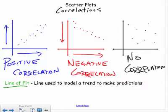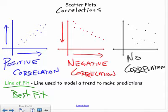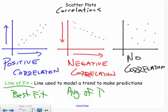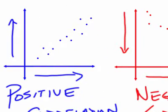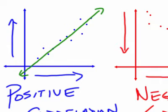We use a line of fit — sometimes called line of best fit — to model a trend and make predictions. This line must be a straight line. It doesn't have to go through the origin; think of it as the average of all your scatter plot points. For a positive correlation, the line goes right through the middle of all the points.